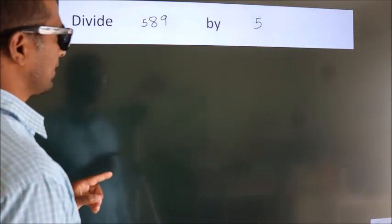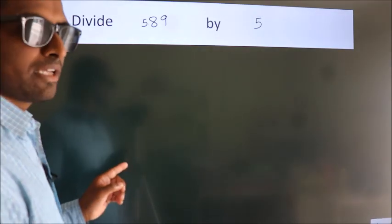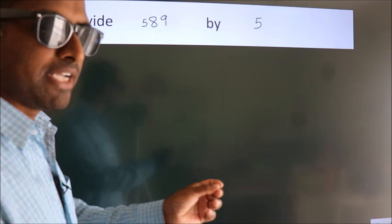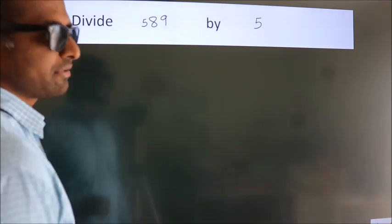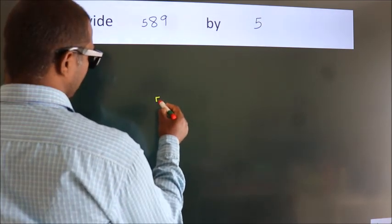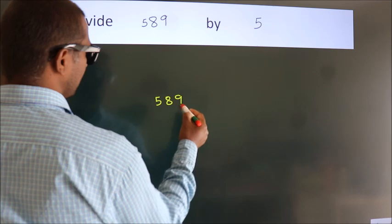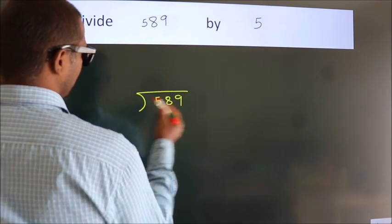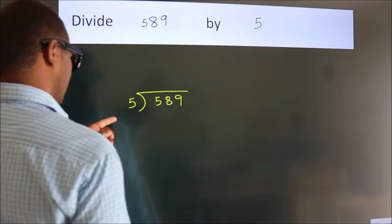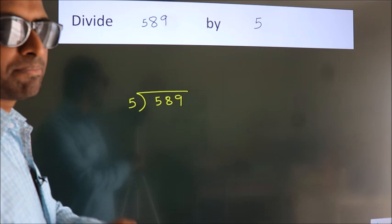Divide 589 by 5. To do this division, we should frame it in this way. 589 here, 5 here. This is your step 1.